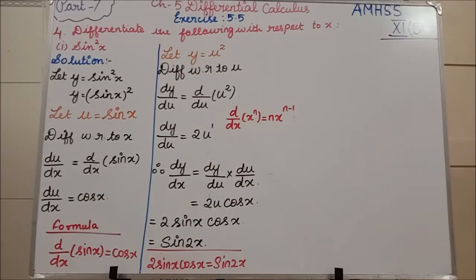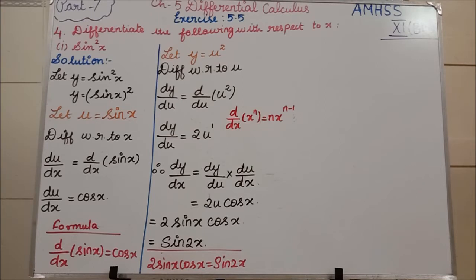Next we are going to see the fourth question, first subdivision: sin²(x). In fourth question all subdivisions have a power value, so we do them using the substitution method. Let y = sin²(x), which we write as y = (sin x)². For all such problems, whatever is inside the square bracket, we take that as u. So let u = sin x.